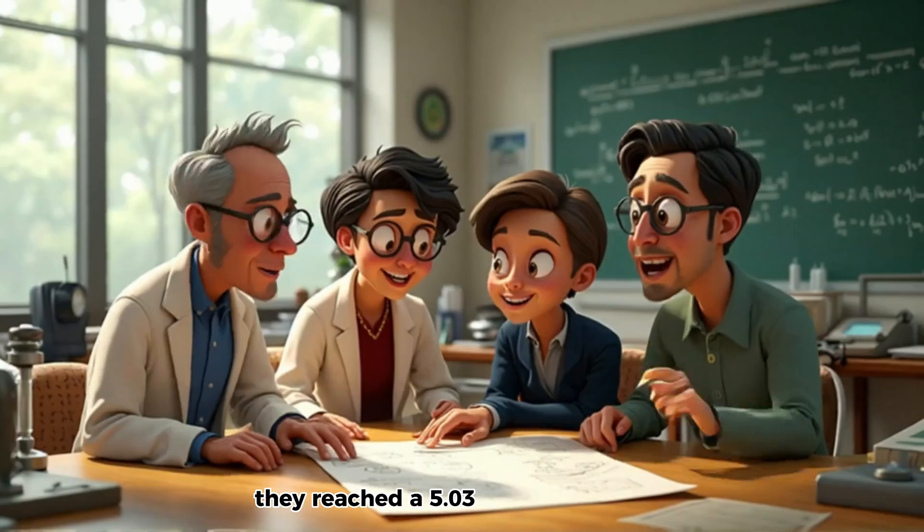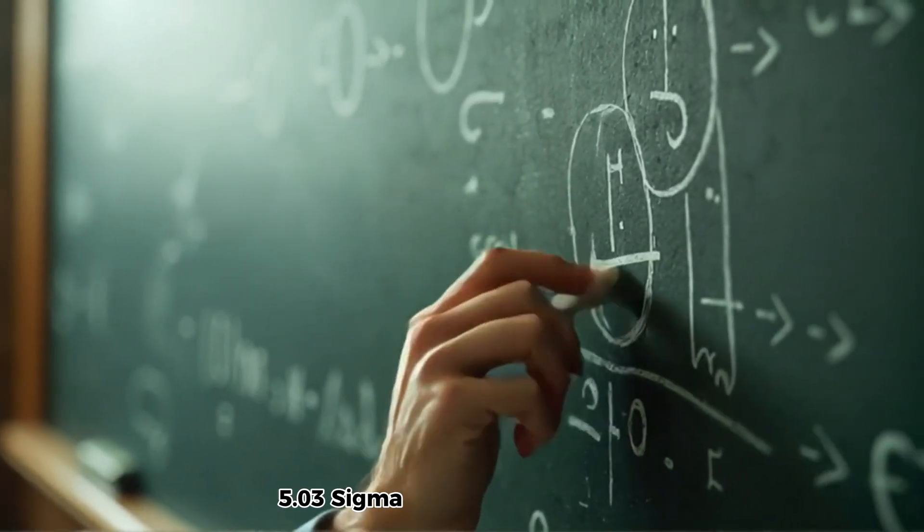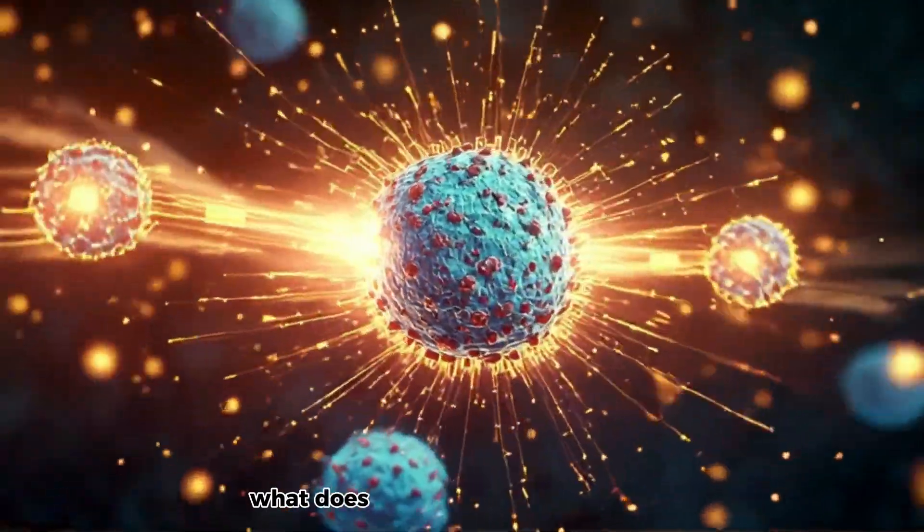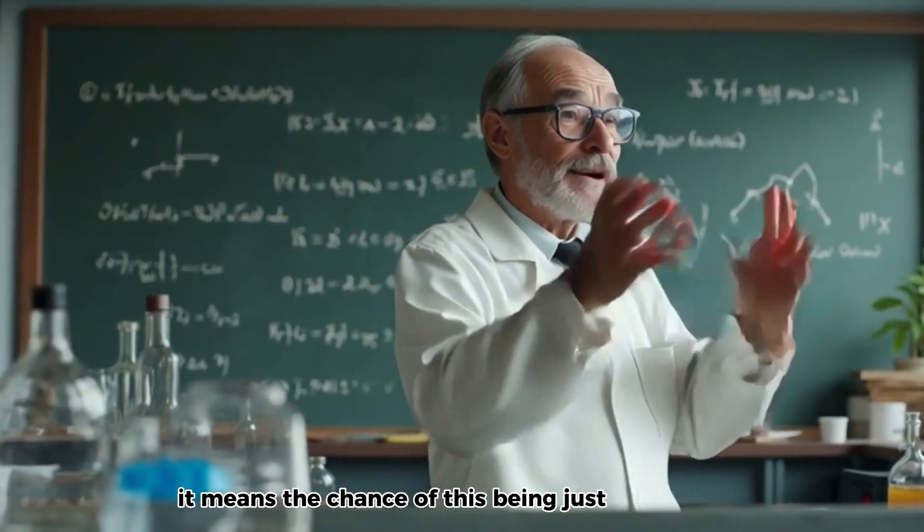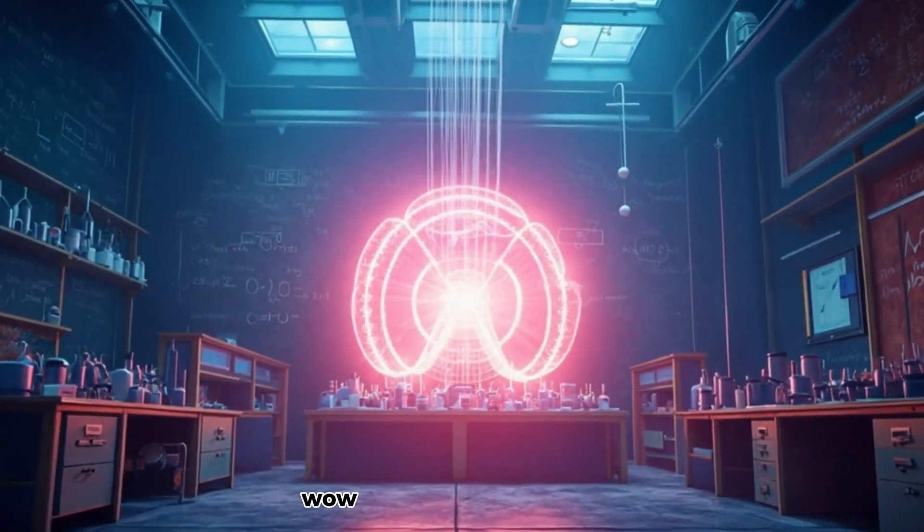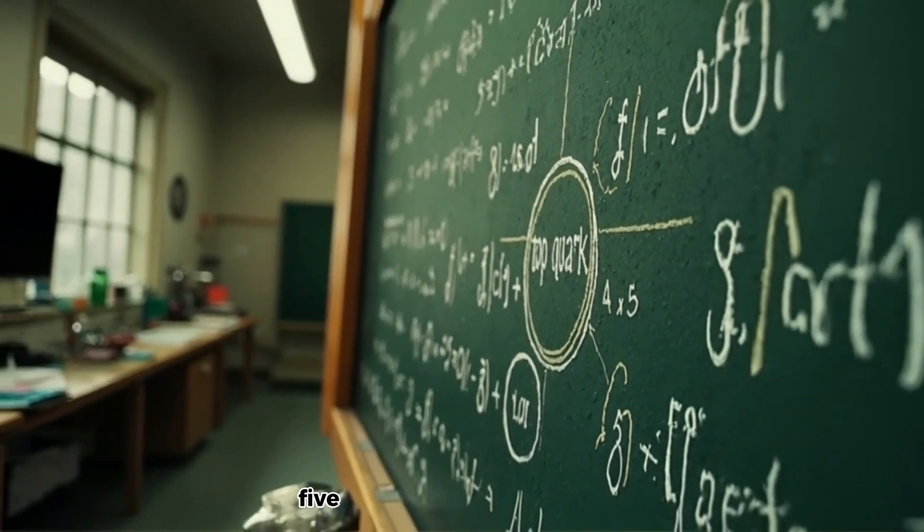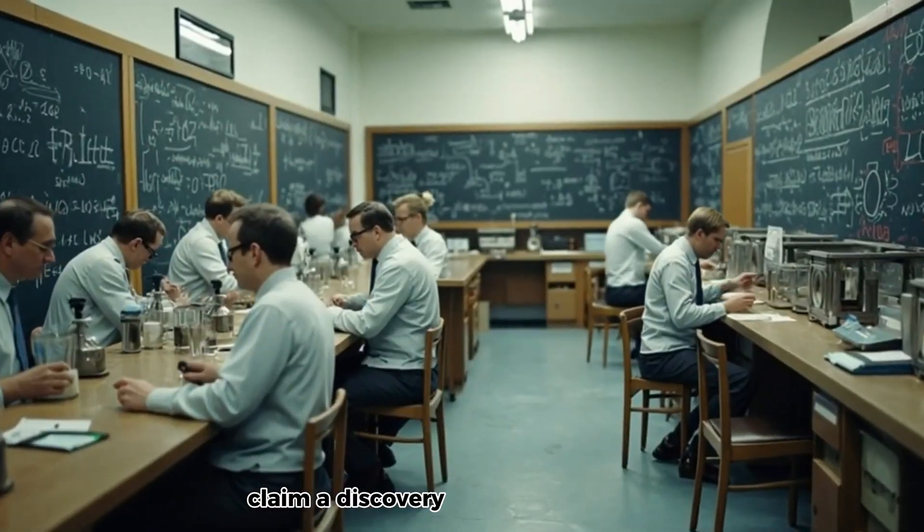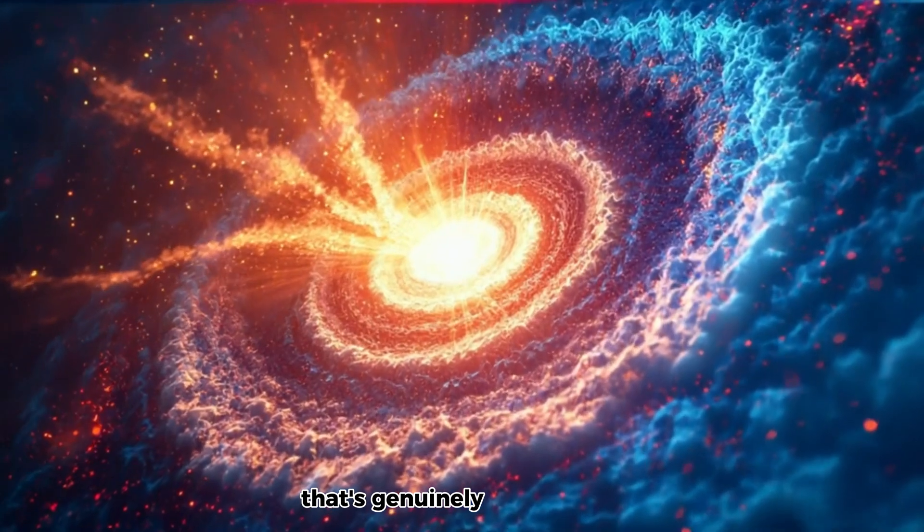Something they could pick out from all the other chaos. Precisely. Amidst the absolute storm of other particles flying around in these lead collisions, they could isolate this pattern. And they did it with remarkable precision. They reached a 5.03 sigma significance. 5.03 sigma. Now, in particle physics, that sounds definitive. What does that mean in practical terms? Less guessing, more knowing. It means the chance of this being just a random blip, a statistical fluke, is less than one in a million.